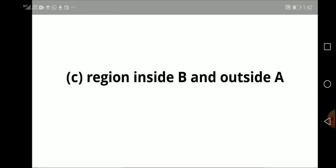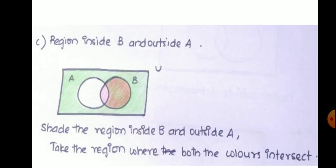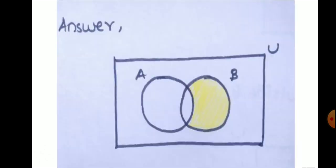Third case, region inside B and outside A. Region inside B and outside A means shade the region inside B and then outside A. Take the region where both the colors intersect. So this is the answer.